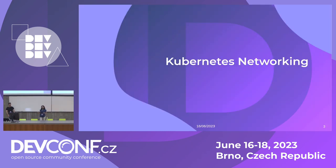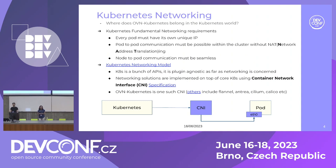So, Kubernetes networking. The fundamentals are: every pod must have a unique IP — you must allocate an IP to a pod that's unique across the entire cluster. The pod must be able to talk to other pods in the cluster, to other nodes in the cluster, and even to external entities outside the cluster. The Kubernetes networking model defines that you need to have networking set up as soon as a pod comes up.